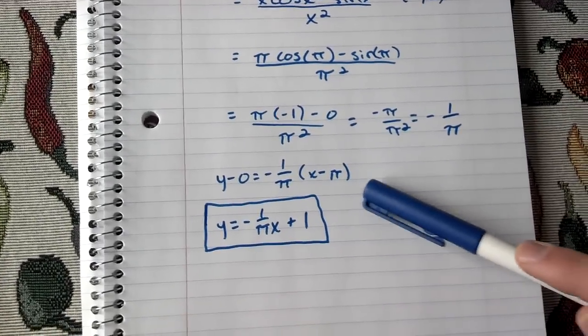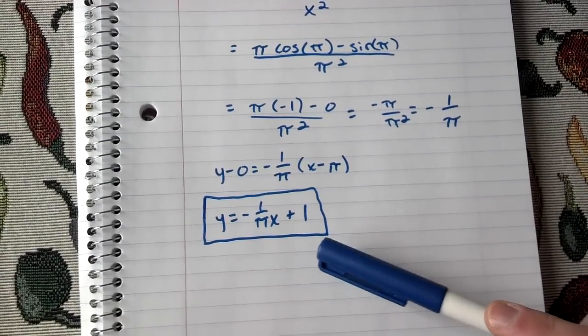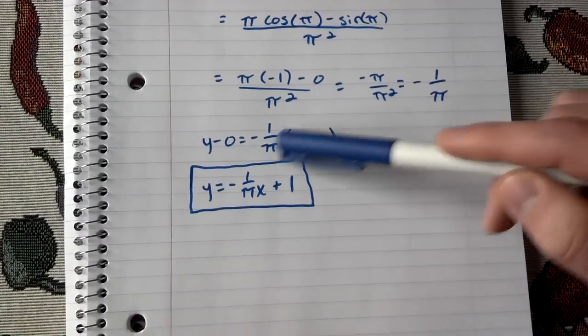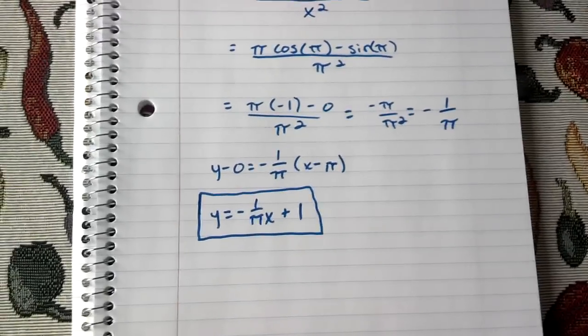Once you solve that and simplify it, you get y equals negative 1 over pi x plus 1, and that's actually your tangent line right there, which is the final answer. Thanks very much.